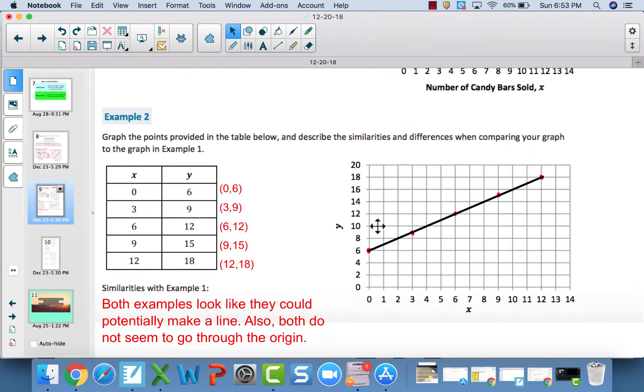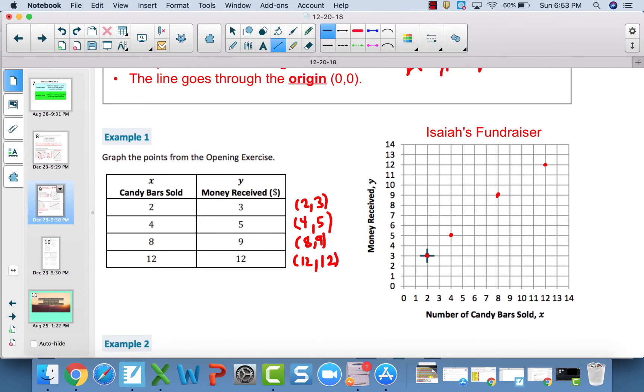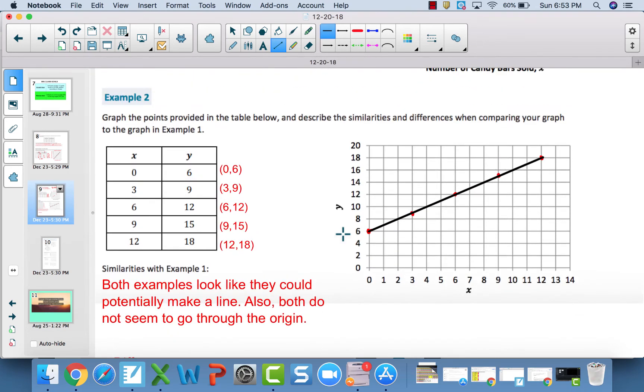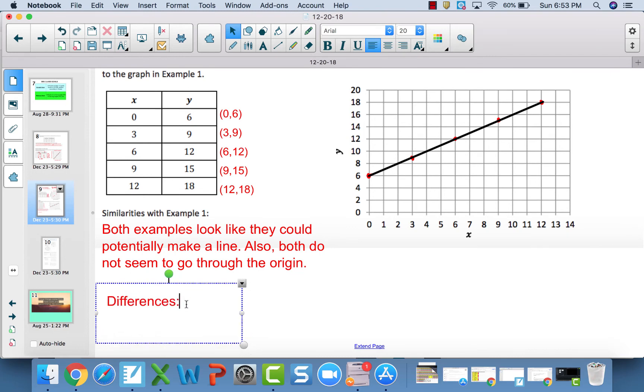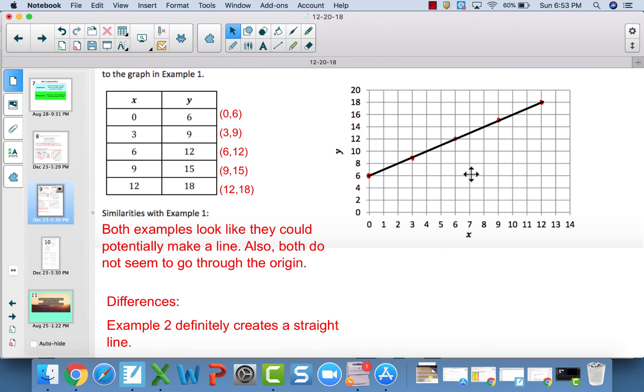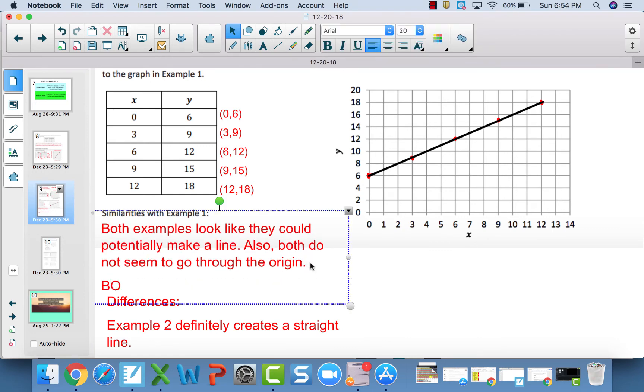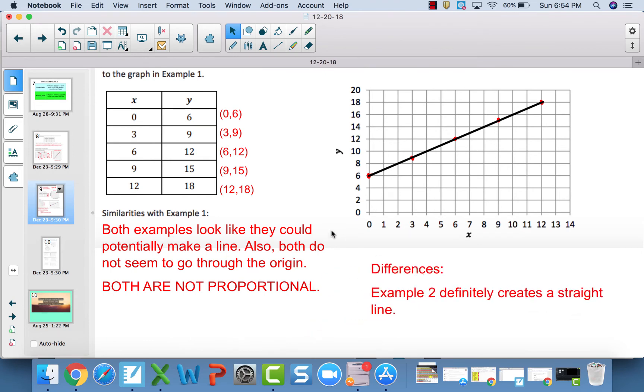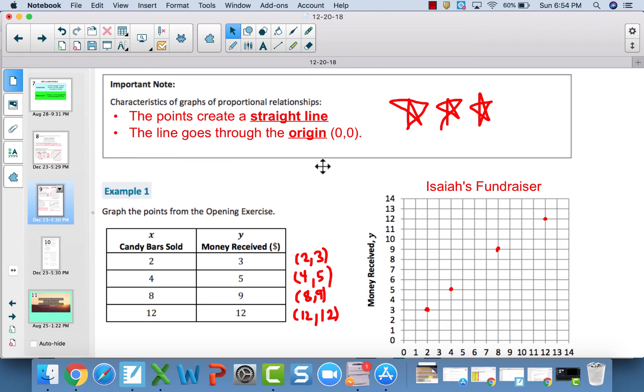Both of these do not seem to go through the origin, because if this went through the origin and made a straight line, it would look different. Similarities: they could potentially make a line. Example two does. But for sure, they both aren't going through the origin. Differences: example two definitely creates a straight line. Both are not proportional because you need both criteria to be proportional. Even if it's a straight line, if they do not go through the origin, it's not proportional. Both of these need to be true.